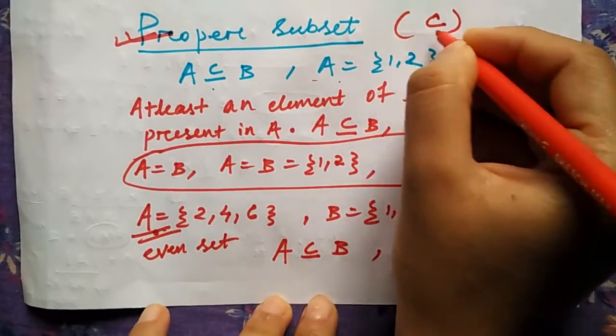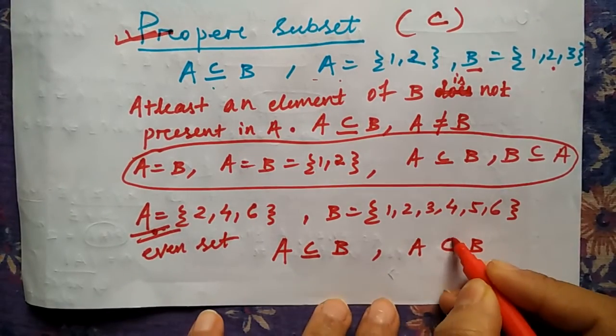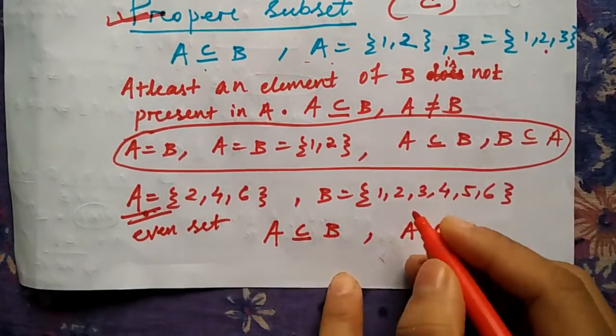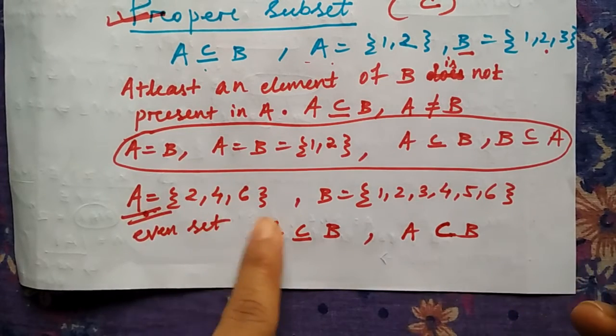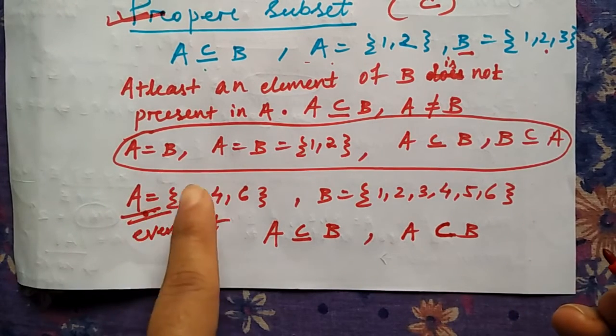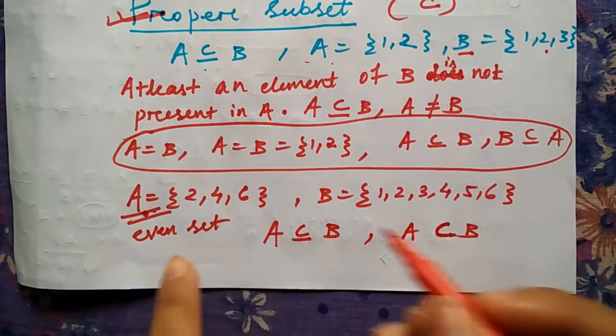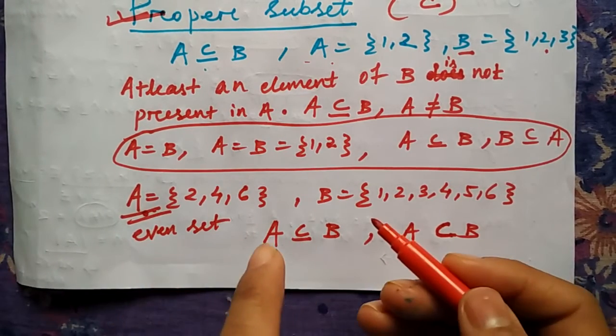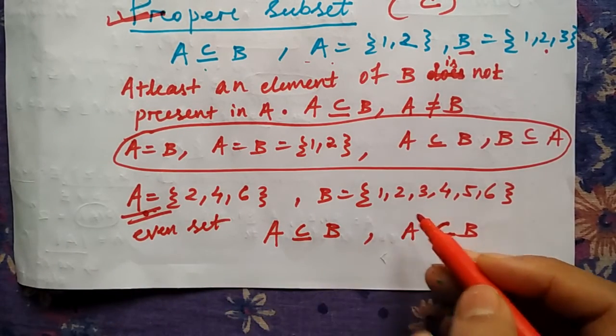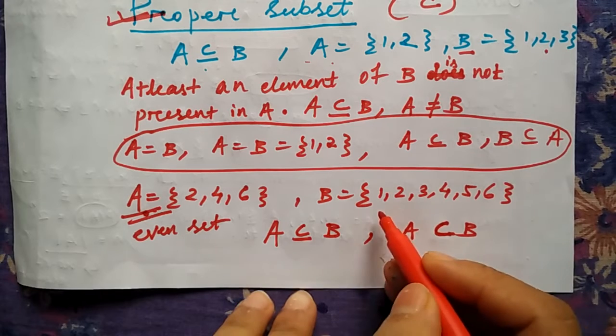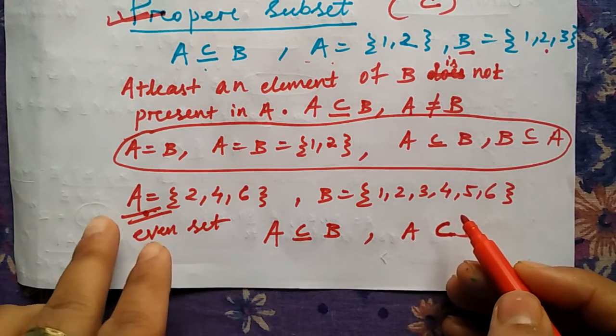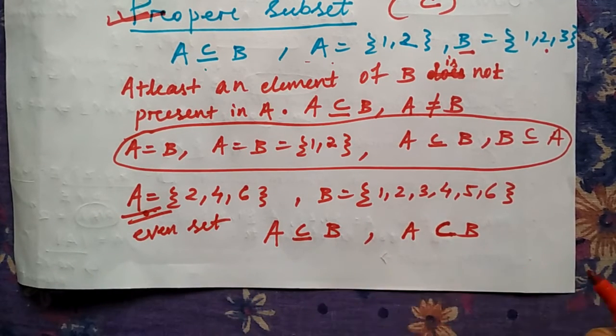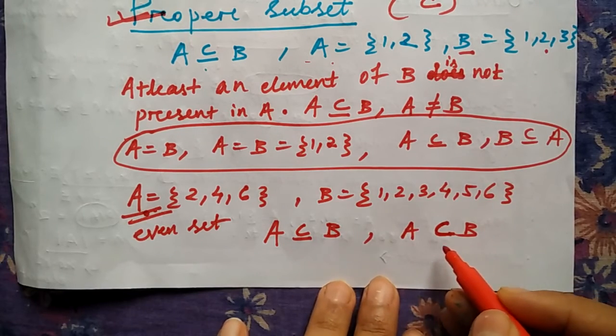So this is called as the proper subset, and the symbol of the proper subset is this one. This bottom line will not be there. Why is it a proper subset? Because B has some elements extra rather than A which can't be there present in A ever, because this is an even set and we can't contain odd elements. But B can have odd and even both, so obviously B has an element better than A.